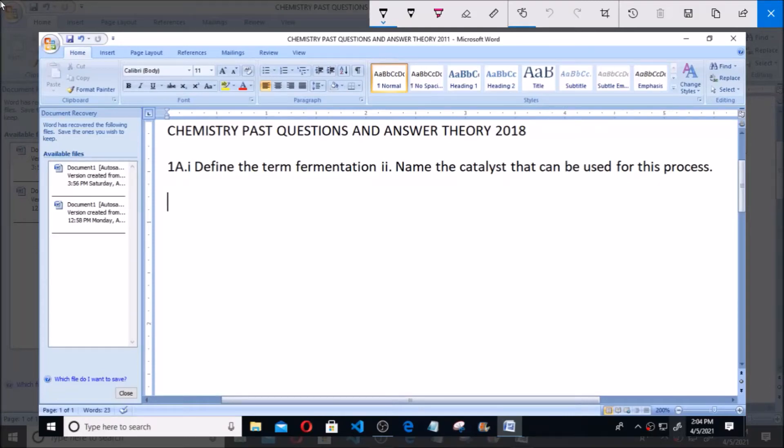Hello, welcome. I will be answering chemistry past questions and answers theory 2018. Question number 1a, roman numeral i: define the term fermentation. Roman numeral ii: name the catalyst that can be used for this process. Now to the answers.